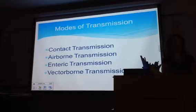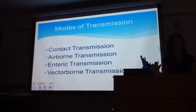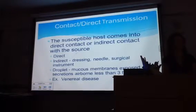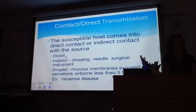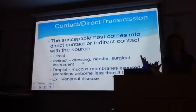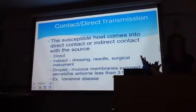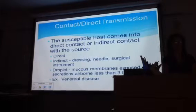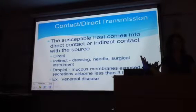Modes of transmission include contact transmission — skin-to-skin — airborne, enteric, and vector-borne. Direct contact transmission is when a susceptible host comes into direct contact with the source, like skin-to-skin. Indirect contact is like dressing, needle, or surgical instrument. Then you have droplet transmission — mucous membranes exposed to secretions, airborne within less than three feet. An example of droplet transmission is venereal disease.